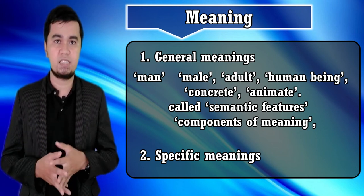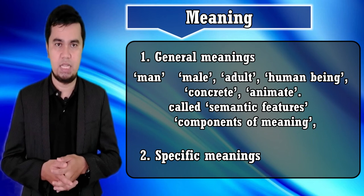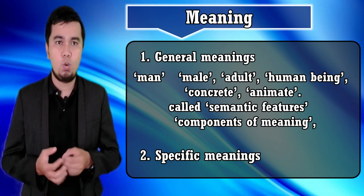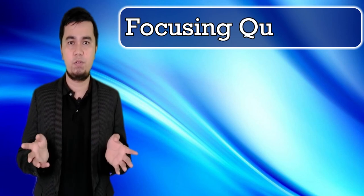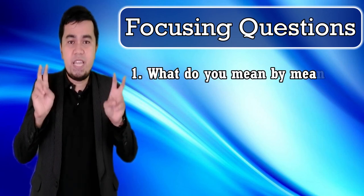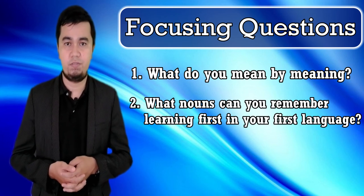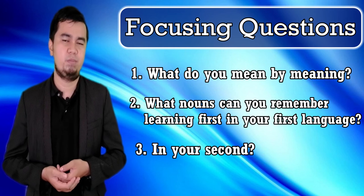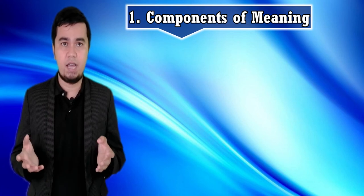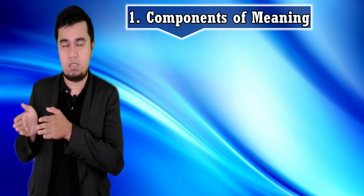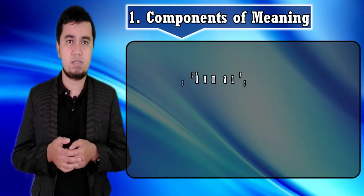In specific meanings, we know the range of specific senses of 'man' — the OED has 17 main entries for 'man' only as a noun, ranging from 'a human being' to 'one of the pieces used in chess.' Next is types of meaning. What do you mean by meaning? What nouns can you remember learning first in your first language and in your second language? We have three components: components of meaning, lexical relations, and prototypes.